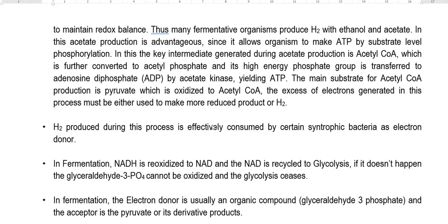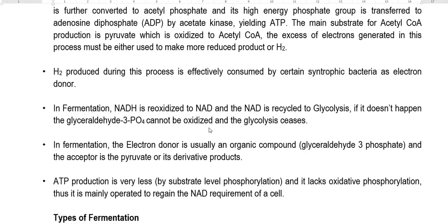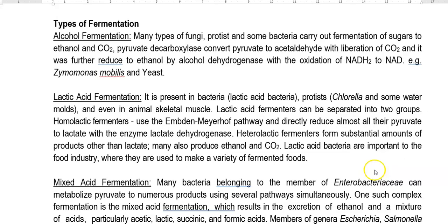If NAD recycling does not happen, glyceraldehyde-3-phosphate cannot be further oxidized and the whole glycolysis process ceases. Thus, in fermentation, the electron donor is usually an organic compound — mainly glyceraldehyde-3-phosphate — and the acceptor is pyruvate or its derivative products. ATP production is very low during substrate level phosphorylation, as it lacks the electron transport chain and subsequent oxidative phosphorylation.